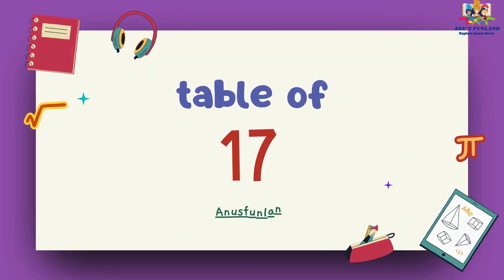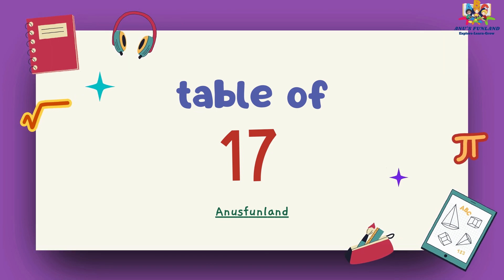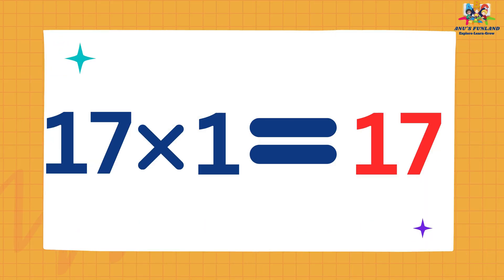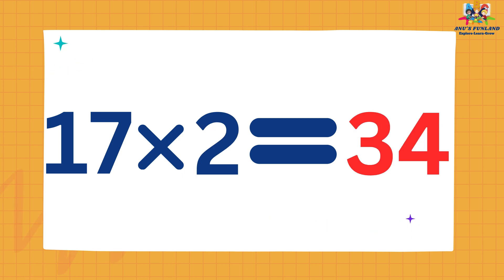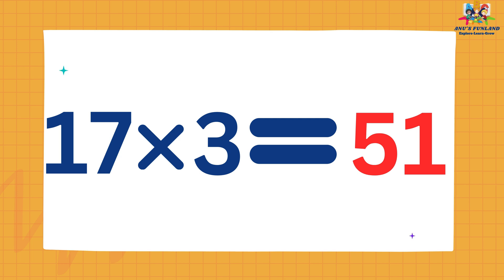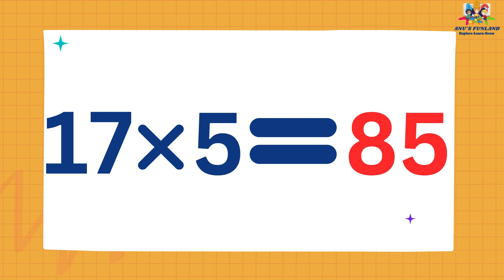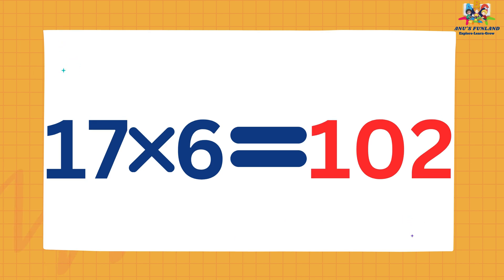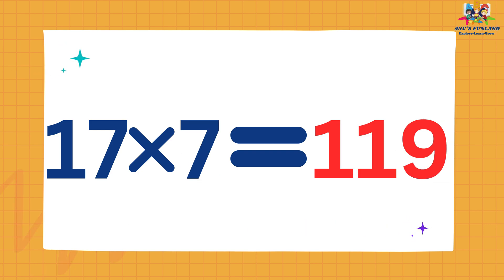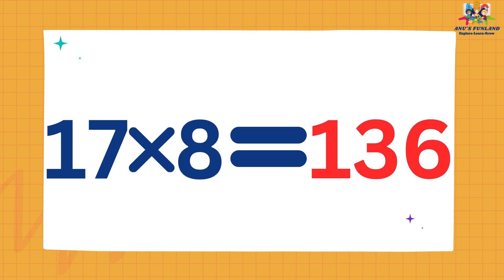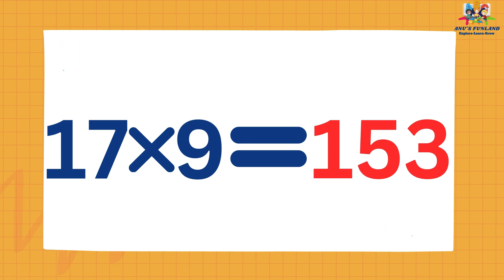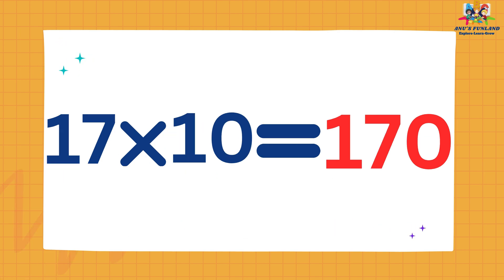Now we will learn table of 17. 17 ones are 17. 17 twos are 34. 17 threes are 51. 17 fours are 68. 17 fives are 85. 17 sixes are 102. 17 sevens are 119. 17 eights are 136. 17 nines are 153. 17 tens are 170.